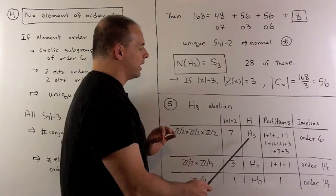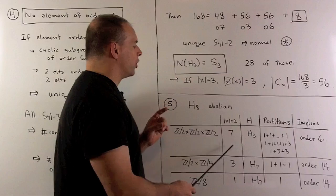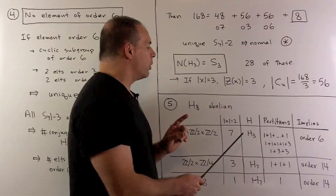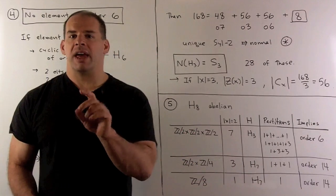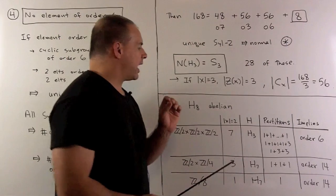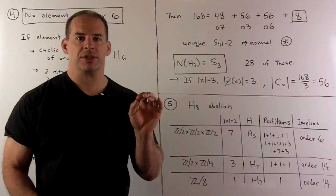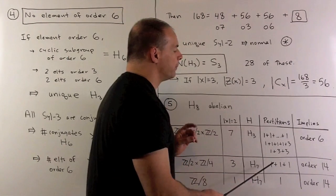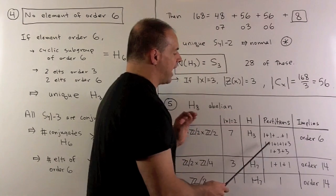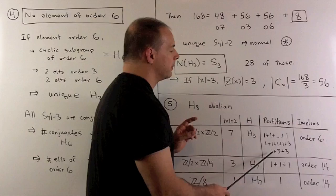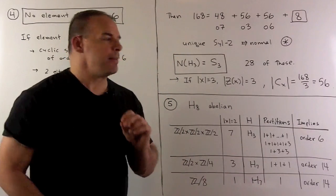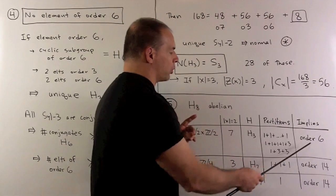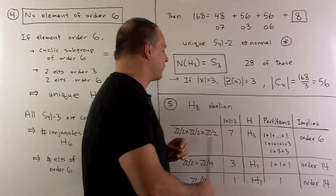In the first case, I'm going to let a Sylow 3-subgroup act on our seven elements of order two by conjugation. Conjugation preserves orders of elements, so the orbits have one or three elements. How many ways can I write seven as a sum of ones and threes? Three ways: seven ones, four ones and a three, or a one and two threes. Each of these has at least one orbit with one element, meaning H3 is in the centralizer of that element of order two, which would give an element of order six — which we can't have. So we rule out the first case.